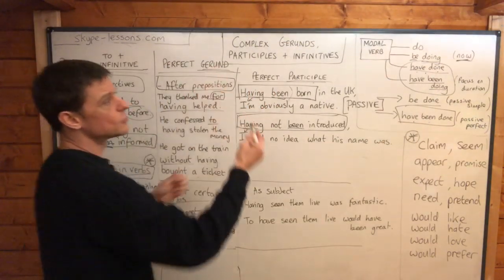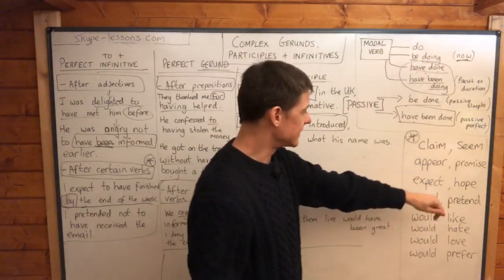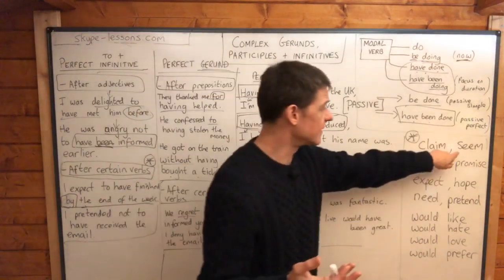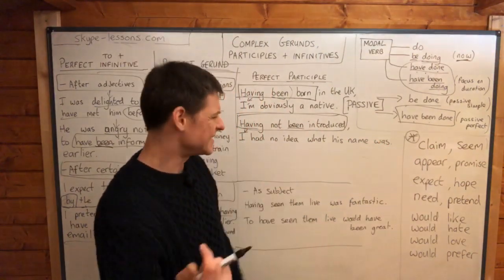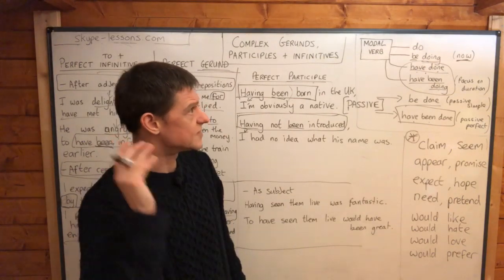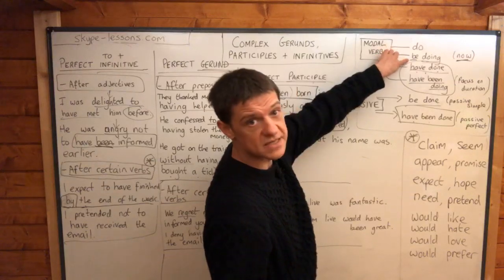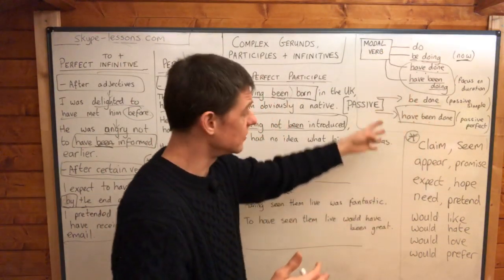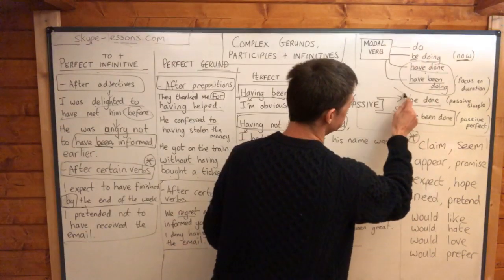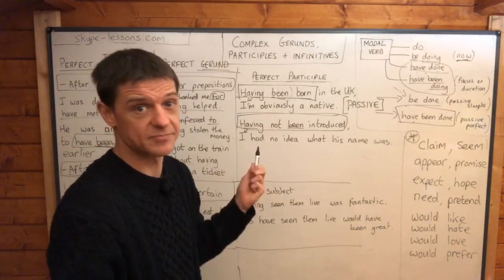You can also get simple gerunds in continuous form — 'at the moment, he seems to be making progress.' You can use it in continuous form as well; it doesn't have to be in perfect. These are also complex forms. We can also use them in the simple passive: 'it seems to be done' or 'it seems to have been done' — both are okay.